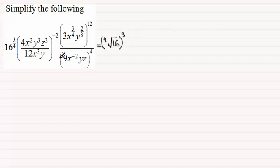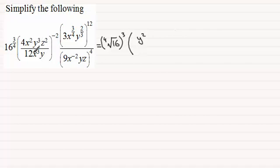Now for this next bracket, I'm going to take the y terms first. I can see that y cubed divided by y is going to give me y squared. We haven't got any z's in here apart from z squared on the top, so I'll put z squared there.